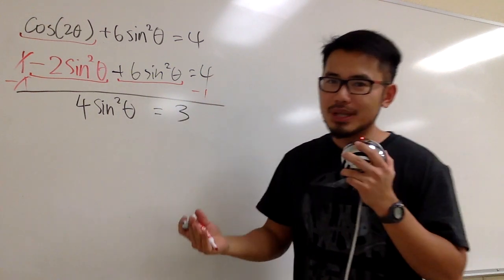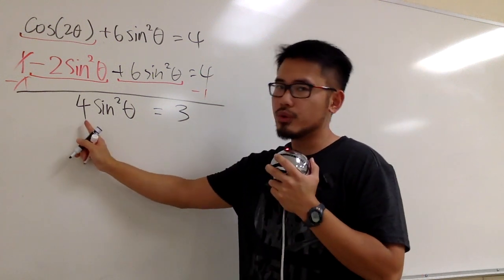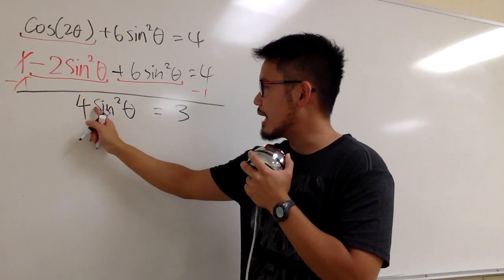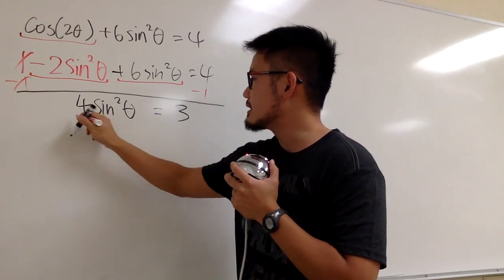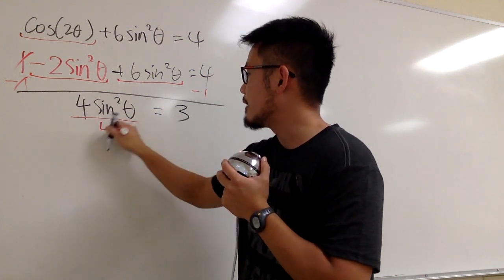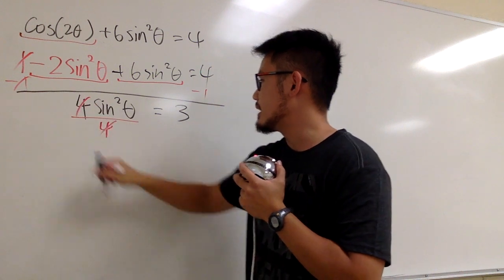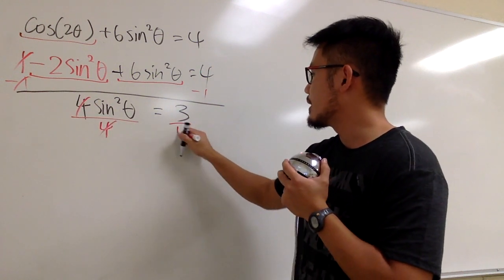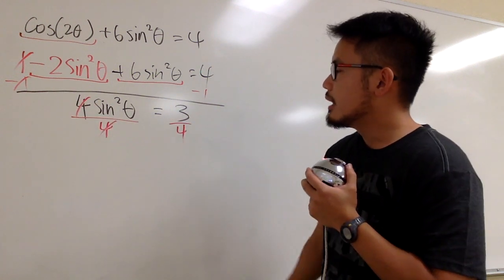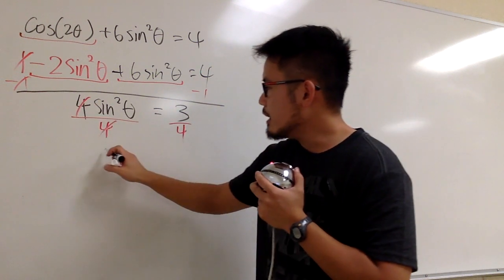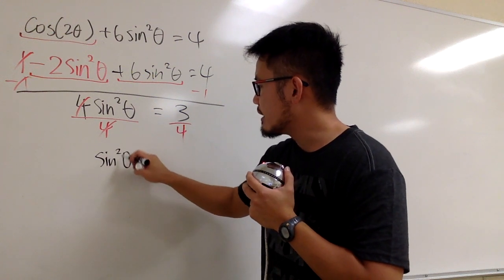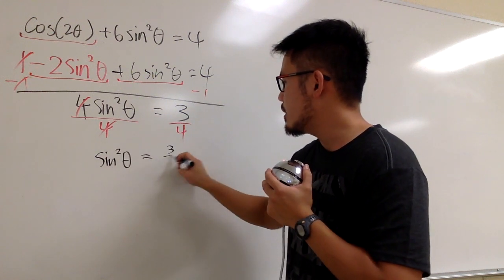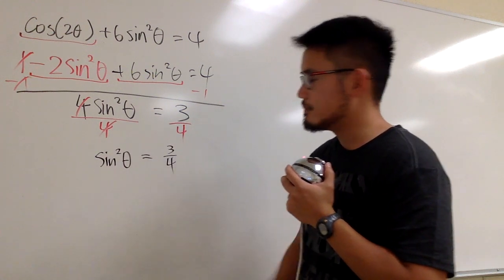We do not want the 4 coefficient — this is 4 times sine squared theta — so let's divide both sides by 4. This cancels and we have sine squared theta is equal to 3 over 4.